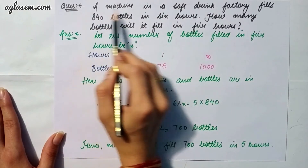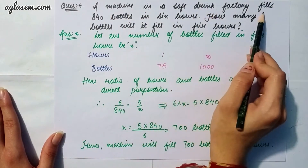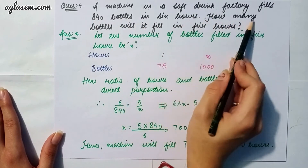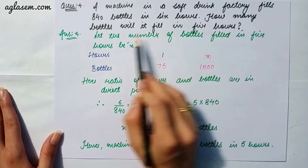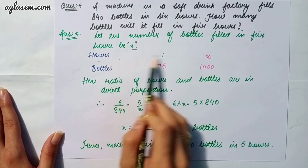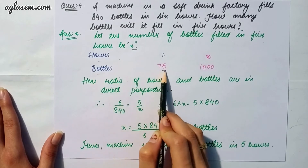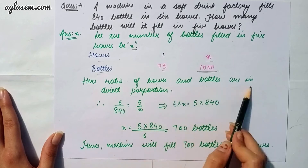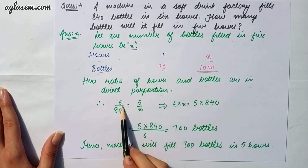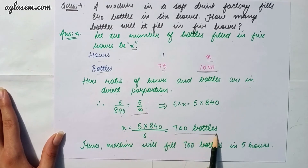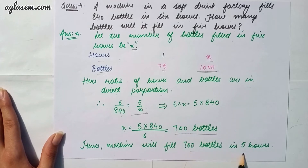Question 4: A machine in a soft drink factory fills 840 bottles in 6 hours. How many bottles will be filled in 5 hours? Let the bottles filled in 5 hours be x. The number of bottles and time are in direct proportion, so 6/840 = 5/x, giving x = 700 bottles. So the machine can fill 700 bottles in 5 hours.